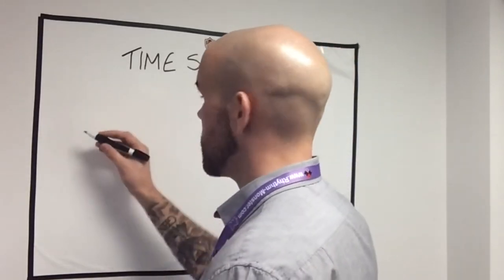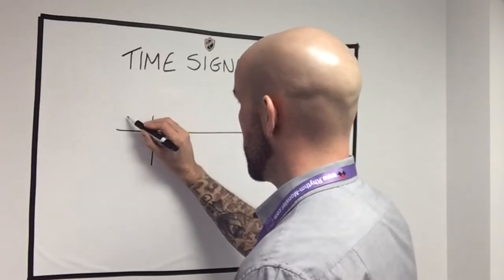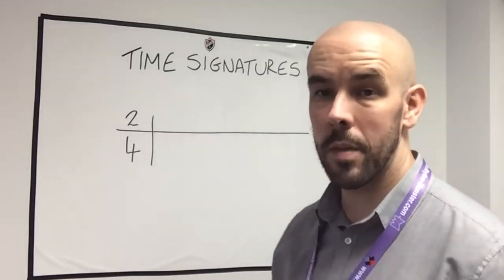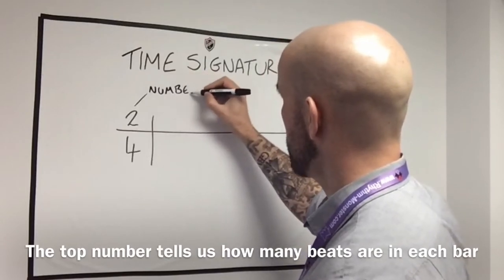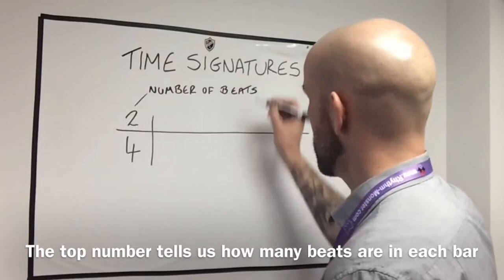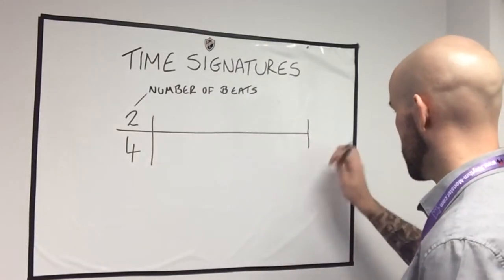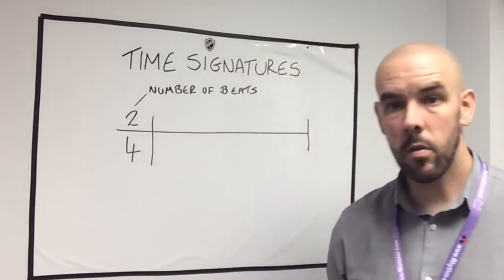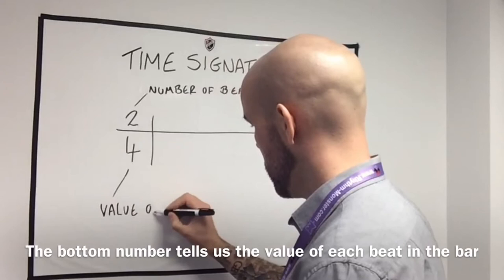The two numbers are placed at the start of a piece of music. Here's our stave, roughly drawn. Let's say it's a 2-4 that we're playing — there's our time signature, 2-4. The first thing it tells us is the amount of beats per bar — that's what the top number tells us, the number of beats. The bottom number tells us the value of each beat.